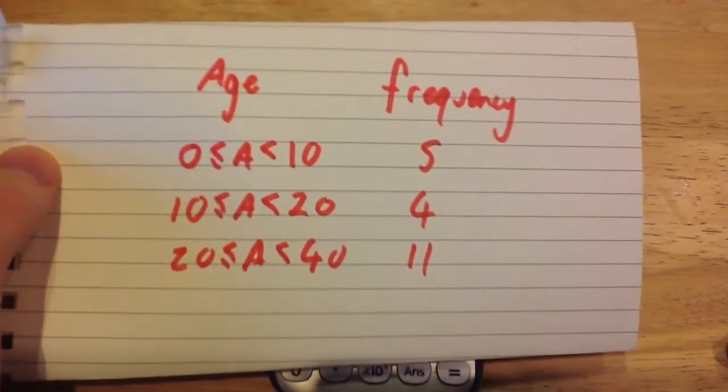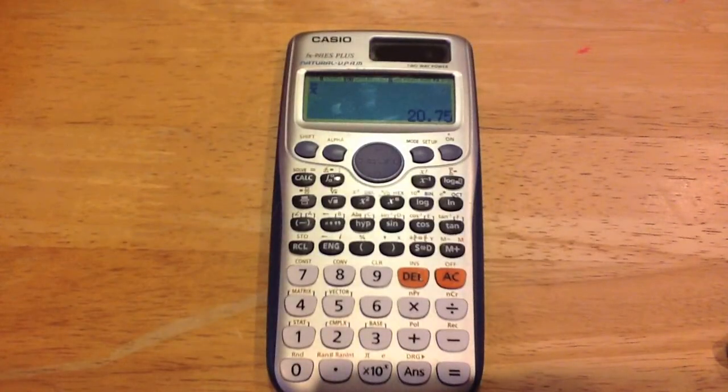So the mean for the set of information, this grouped frequency table, is 20.75.